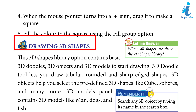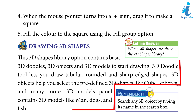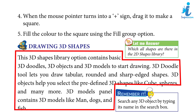Drawing 3D shapes: the 3D Shapes library option contains basic 3D doodles, 3D objects, and 3D models to start drawing. The 3D Doodle tool lets you draw tubular, rounded, and sharp-edge shapes. 3D Objects help you select predefined 3D shapes like cube, sphere, and many more. The 3D Shapes panel contains 3D models like man, dogs, and fish.